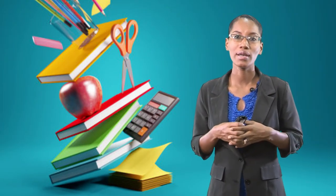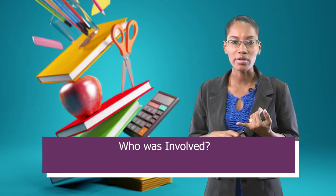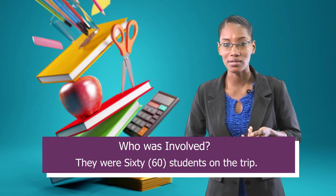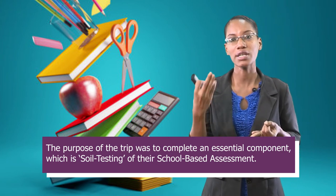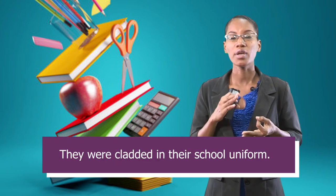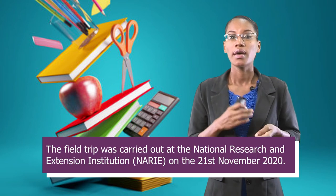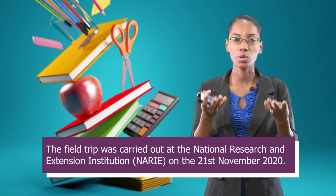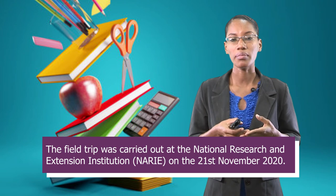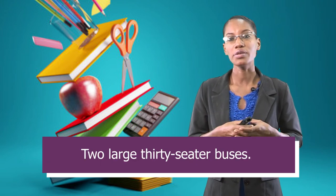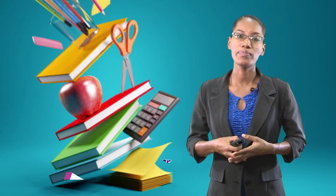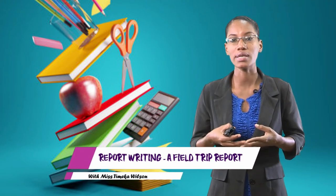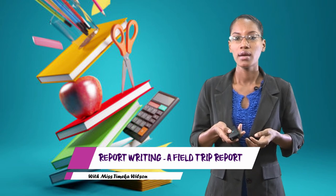That's the end of our report. Let's go back quickly. We looked at who were involved — we know that there were 60 students on the trip. The purpose of the trip was to complete an essential component of their SBA. They were dressed in their school clothes. The trip was to NARI. It occurred in November. They used two large buses. So all of the essential things that were required for our field trip report were included in our sample report.